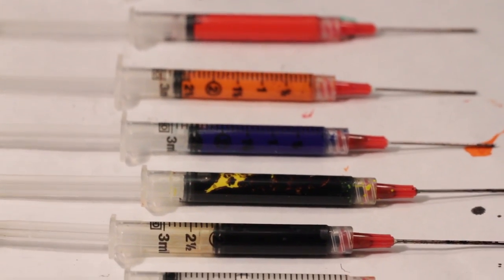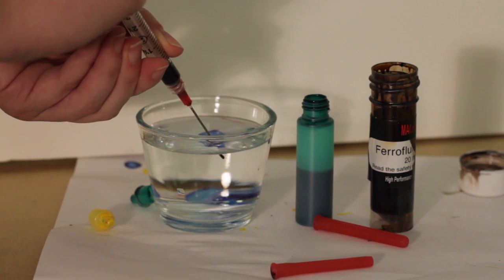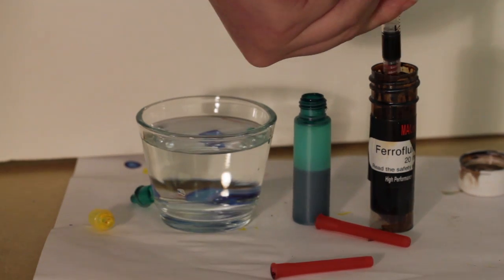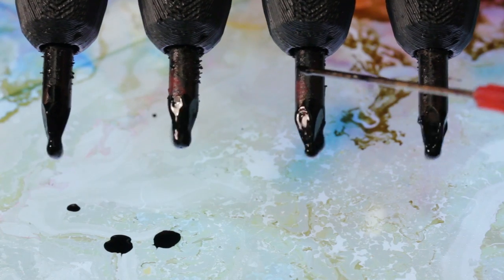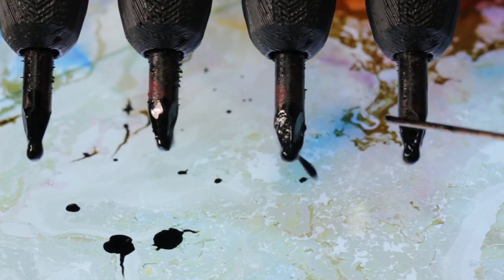To start, we use special water marbling inks that we load into syringes for precise dispensing. Some of the inks we dilute and mix with ferrofluid in order to make the paint responsive to magnetism.